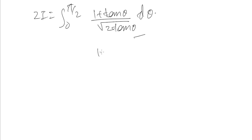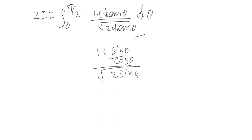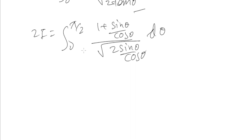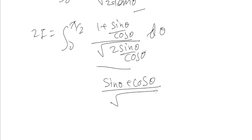We now convert everything in terms of sine and cosine. So f(tan θ) = (1 + sin θ / cos θ) / (√2 · sin θ / cos θ). Simplifying the whole expression from 0 to π/2, we get (sin θ + cos θ) / (√2 · sin θ · cos θ) dθ, giving us 2I equal to this integral from 0 to π/2.